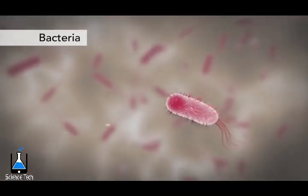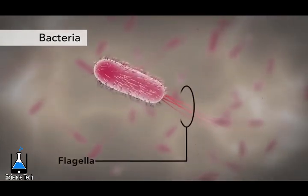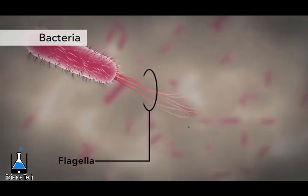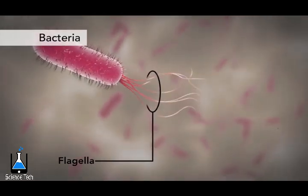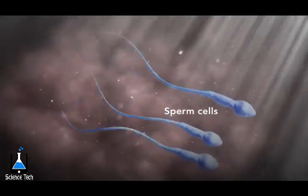Another unique feature in some cells is flagella. Some bacteria have flagella. A flagellum is like a little tail that can help a cell move or propel itself. The only human cell that has a flagellum is a sperm cell.